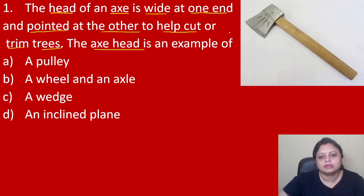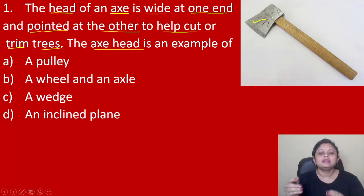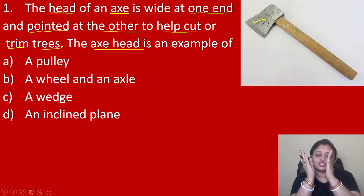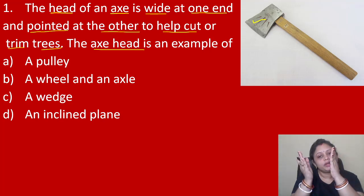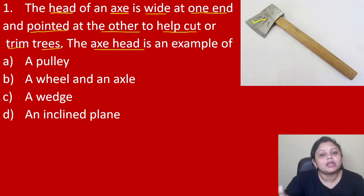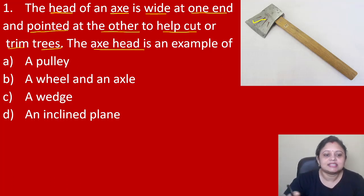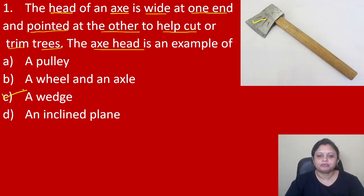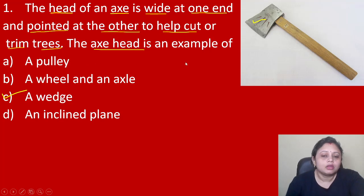The axe head is a combination of two inclined planes joined together. We know that when two inclined planes join together, we call it a wedge. So the axe is an example of a wedge, and the correct answer is option C.